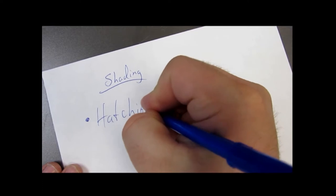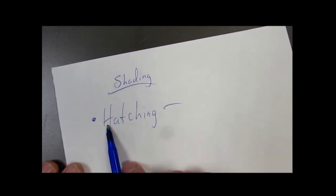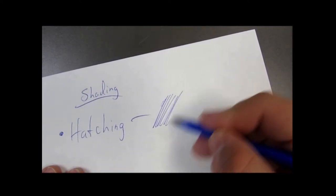The first shading technique is hatching. Hatching lines are repeated next to each other. The farther apart the lines, the lighter the shade; the closer together, the darker the shade.